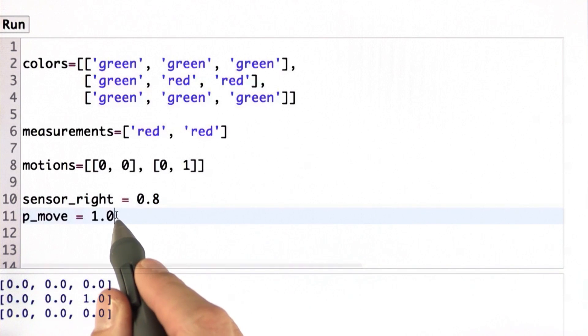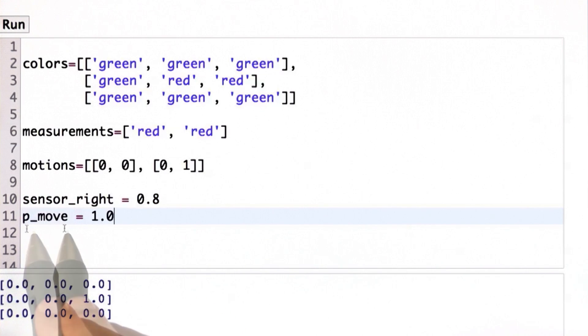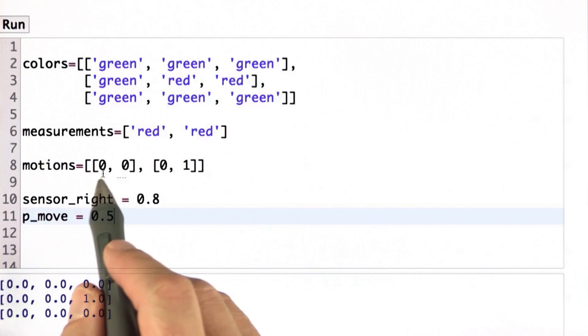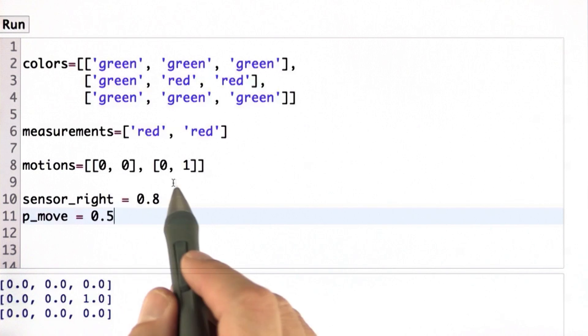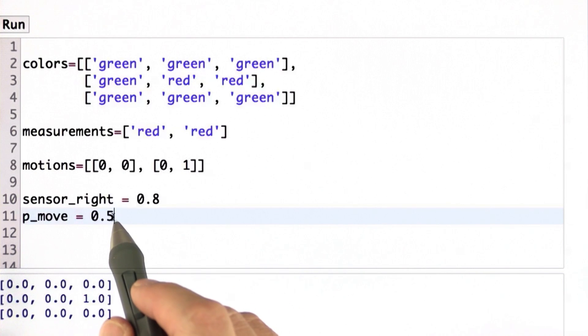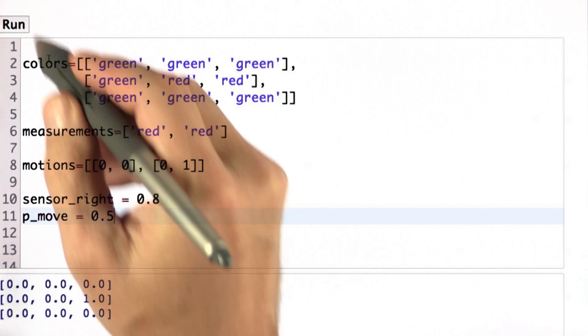Finally, I want to show you what happens if we modify the move variable. Say our motion succeeds only with 0.5 probability, and with the remaining 0.5, we remain at the same location. This doesn't affect the first motion command, because success and failure is the same thing here. We don't move. But this one over here, there's a 50% chance of moving and a 50% chance of staying at the same location.